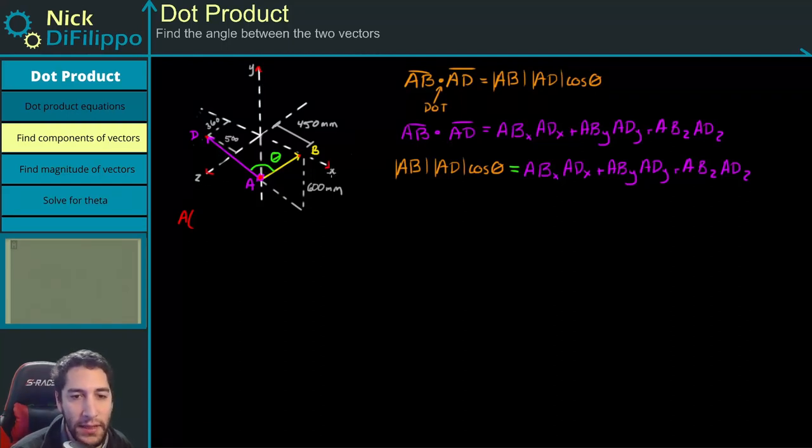So A is only along the y-axis, and it's in the negative direction. I have labeled the x, y, and z that show the positive directions. And point A is 0 in the x, down 600 in the y, and 0 in the z. So 0, minus 600, 0. Now let's go to point B. Point B is along this x line, so it's 450 in the x, 0 in the y, and 0 in the z.